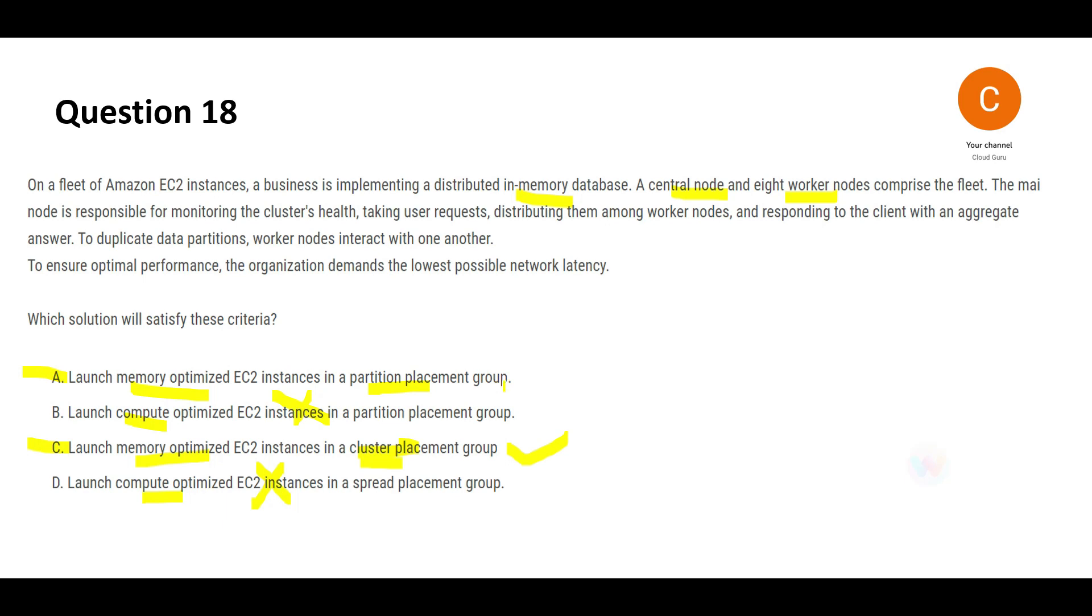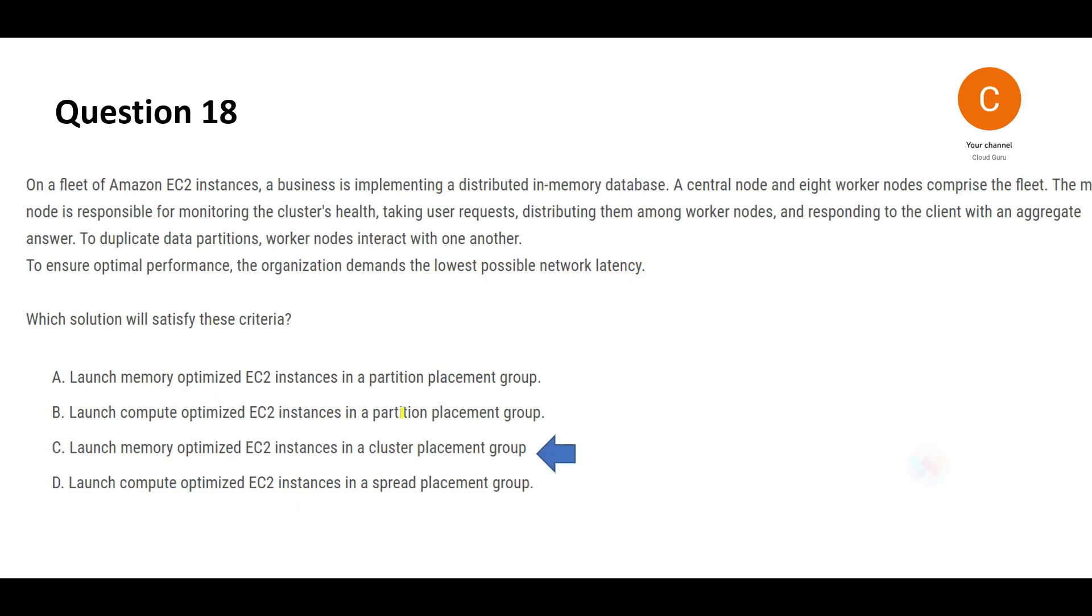Why not partition placement group? Because partition placement group, there is a difference because the underlying hardware is different. We do not want to put all of these central nodes and worker nodes on different hardware. Why? Because you want the lowest possible network latency. And partition placement group uses different hardware for partitioning. One partition on a different hardware, other partition on a different hardware. So if the hardware changes, it is difficult to maintain the lowest possible latency, and hence this would be my final answer.